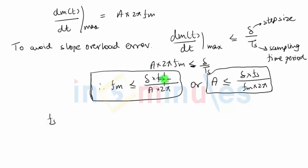I'll keep fs on one side, so fs greater than or equal to - I'll send everything else on the other side. So this 2π times a times fm is in the numerator, and this will be divided by the step size.